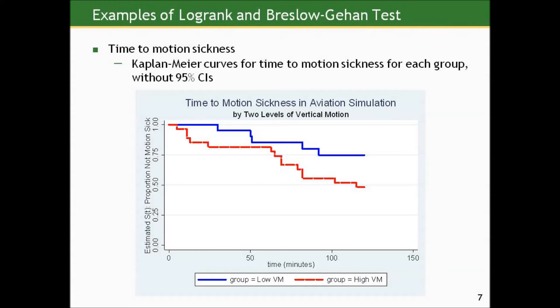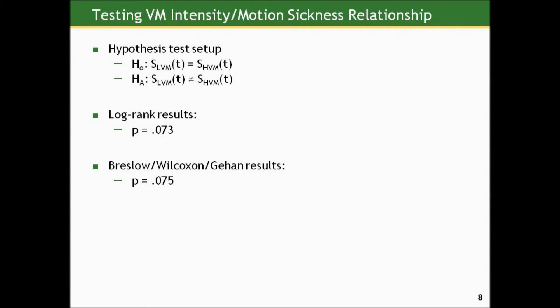We can set this up in the hypothesis testing framework and use the tests discussed to get a p-value. The null here would be that the survival experience of the two groups is equivalent — that the percentage of people who remain event-free over time is the same in both groups at the population level — versus the alternative that it's not. I won't go into how to do this computationally, but I include some bonus material if you want to set this up in Stata. The p-values by both tests are very similar: 0.073 and 0.075.